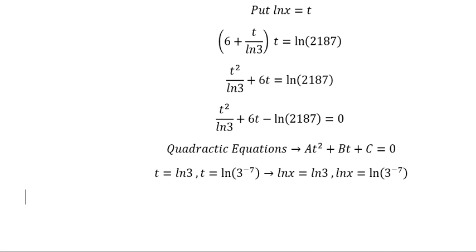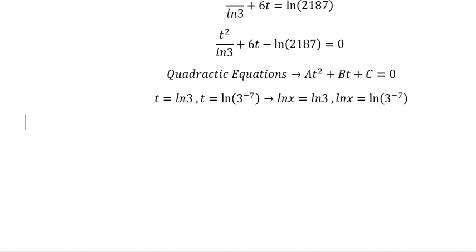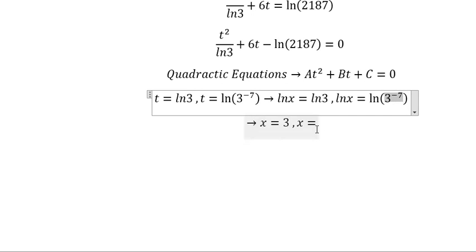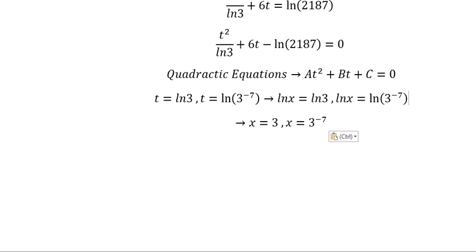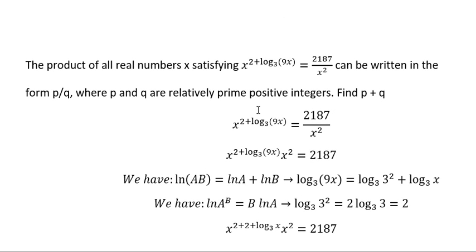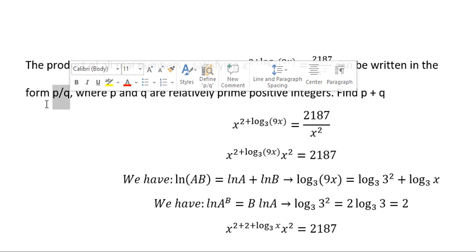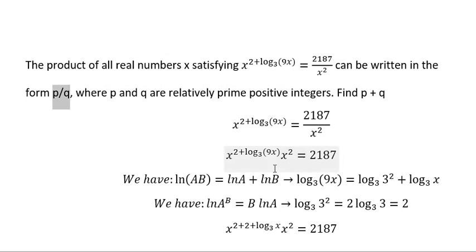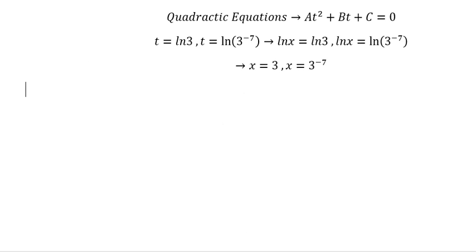Next, on the question, the product of two solutions should be p over q. So that means this multiplied by this, and that should be like this.